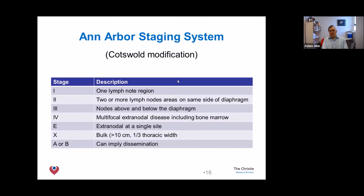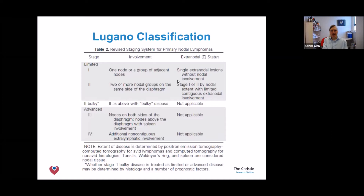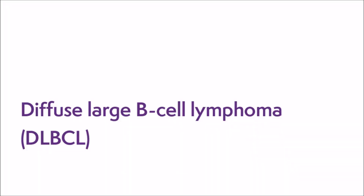Once we put somebody through the scanner and have a stage, we encode it as one, two, three, and four, with additional letters. This got very complicated, so nowadays doctors talk about limited stage lymphoma — old school stages one and two — or advanced stage lymphoma, stages three and four.